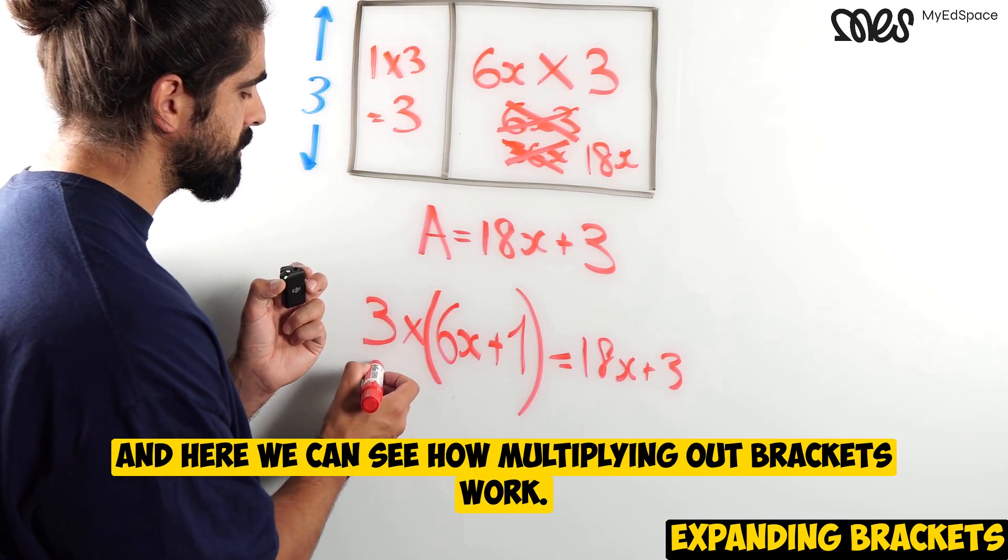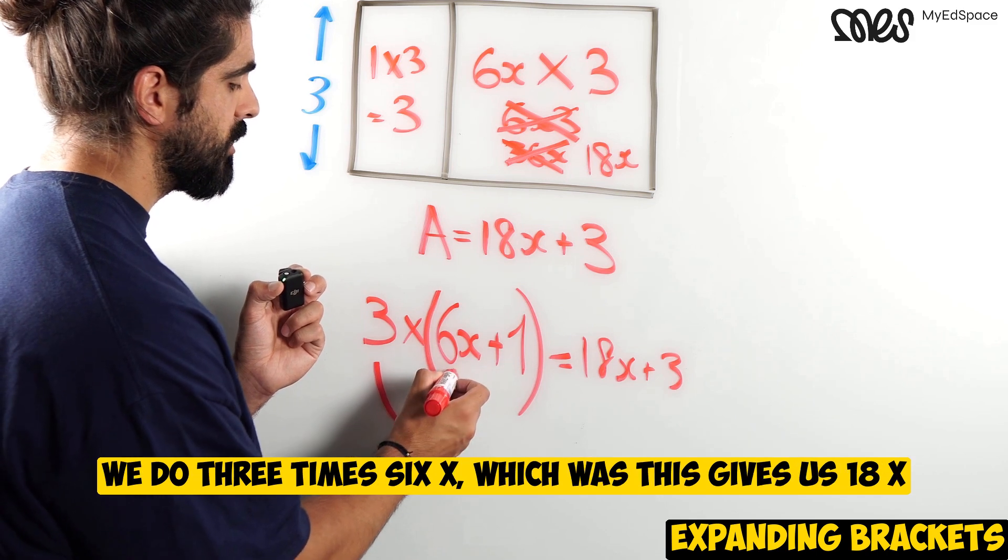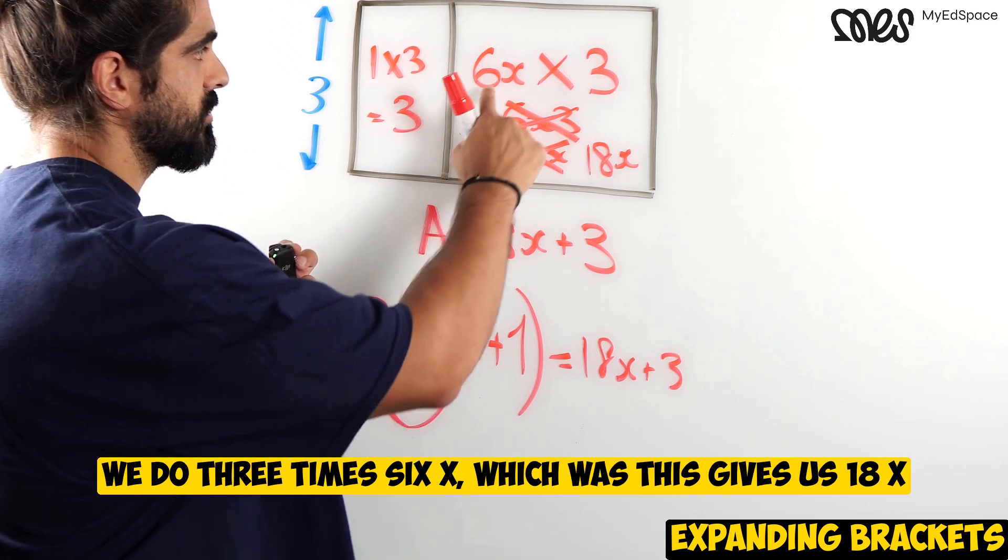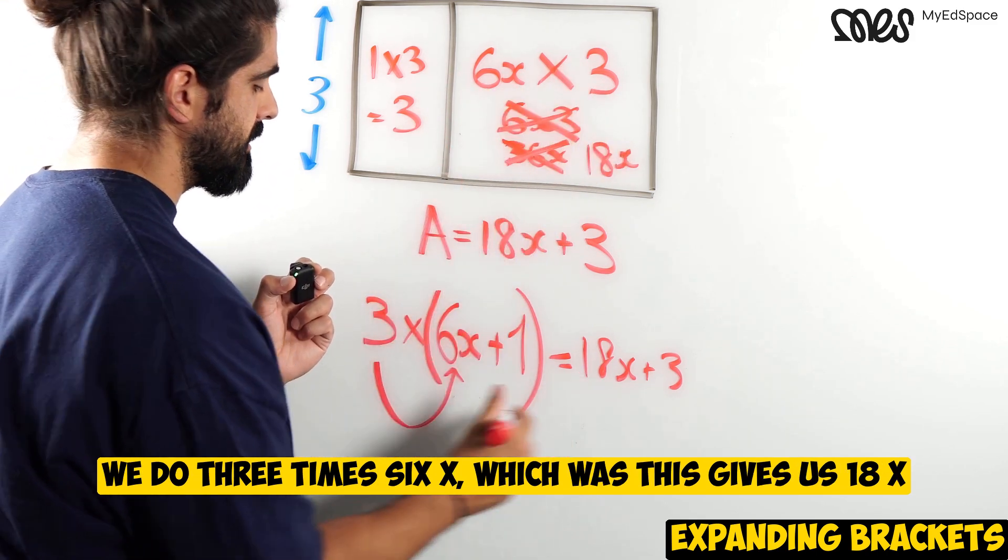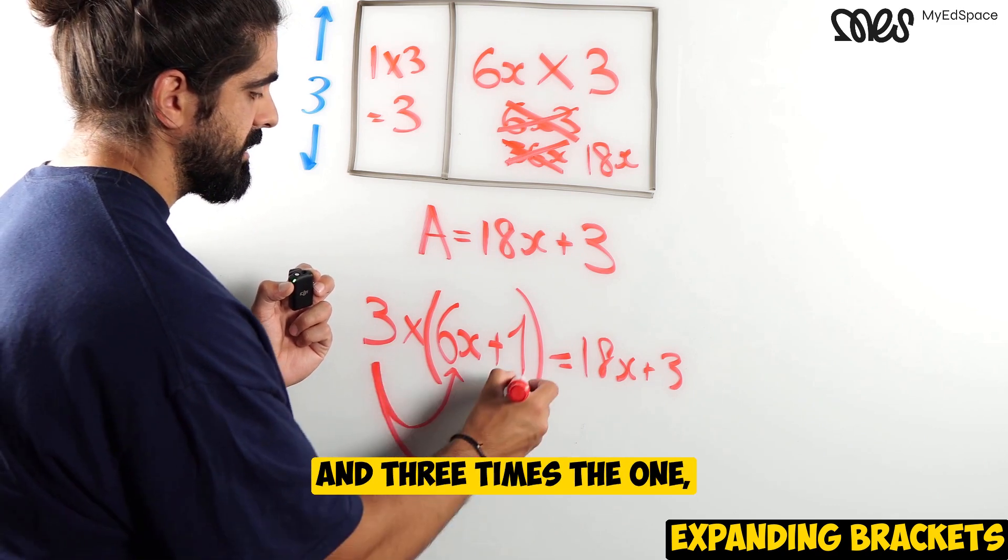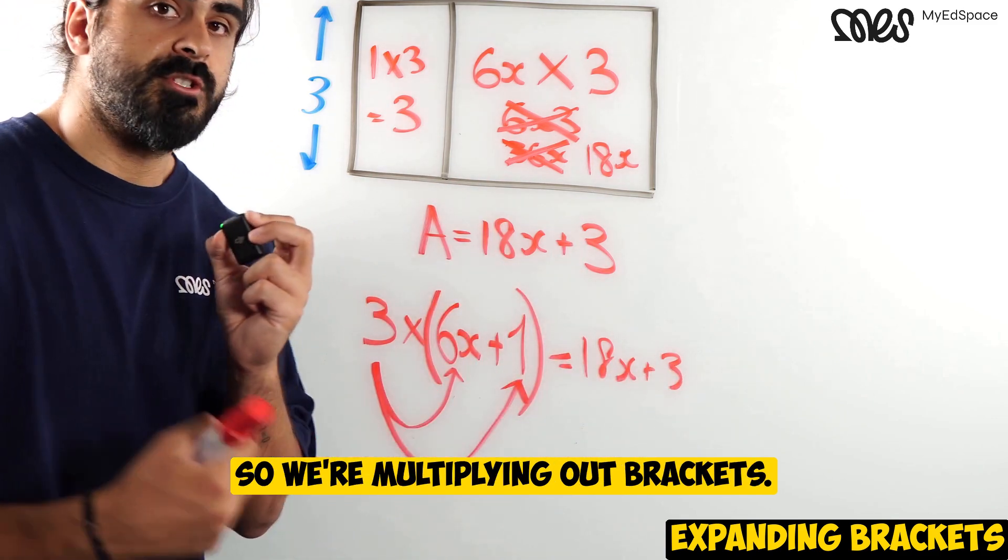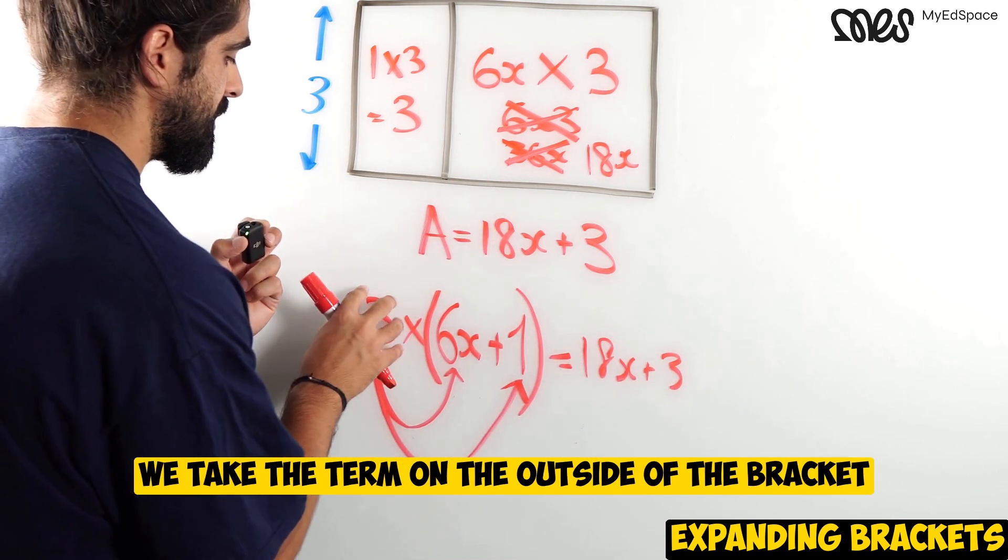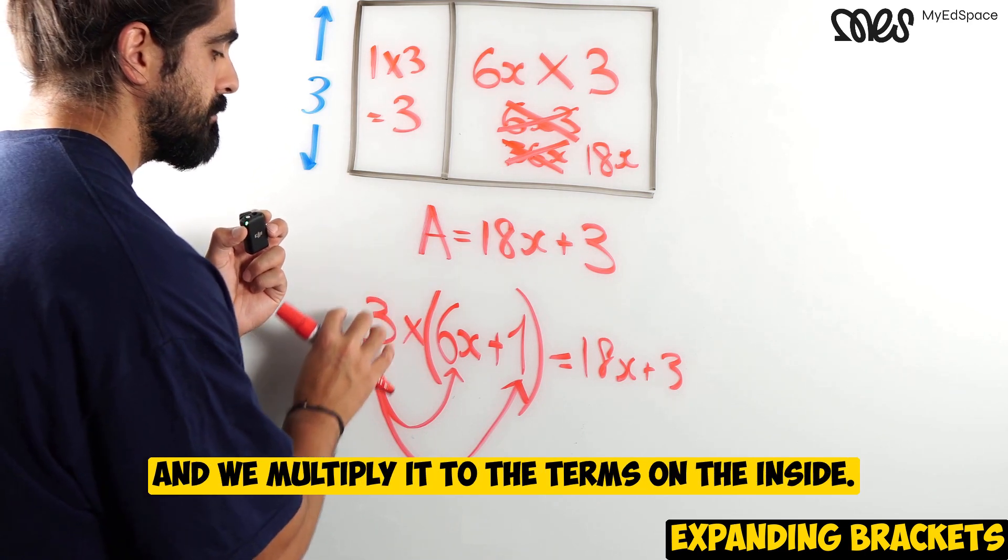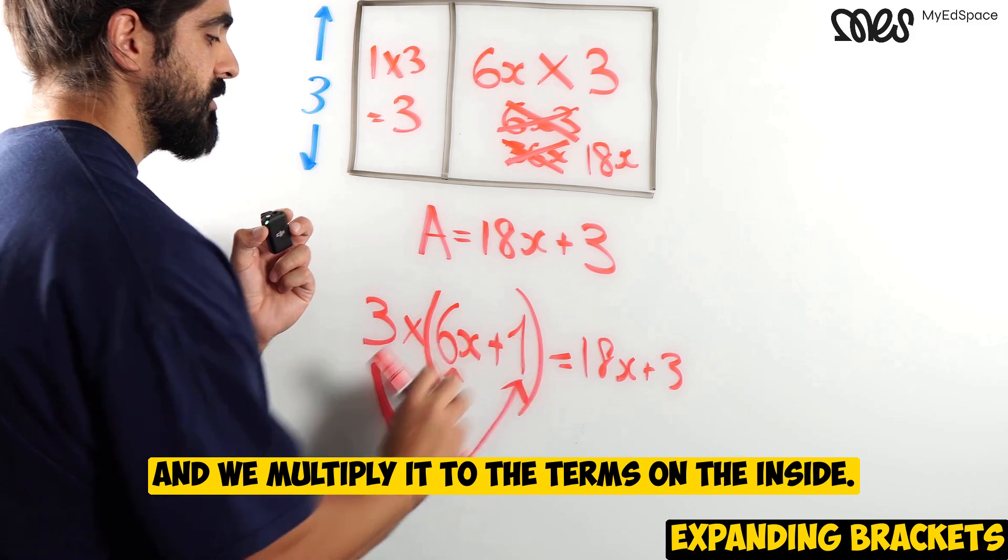There's a problem with that, because I said the area is this full length times 3. So I also have to do 1 times 3. The way we address that is we add a bracket like this, and this value equals 18x plus 3 from above. And here we can see how multiplying out brackets work. We do 3 times 6x which was this, gives us 18x, and 3 times the 1 which was this bit gave us 3. So we're multiplying out brackets. We take the term on outside of the bracket and we multiply it to the terms on the inside.